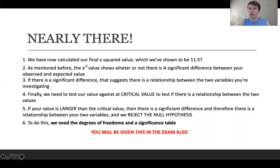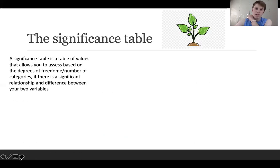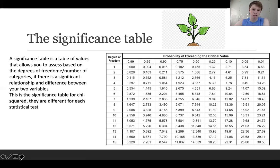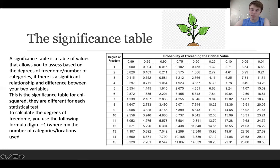The significance table allows you to assess the level of significance based on degrees of freedom and the number of categories. It is different from the Spearman's rank table because they are calculated differently. To calculate degrees of freedom (df), you do n - 1, where n is the number of categories — in this example, the number of locations: areas A, B, and C.